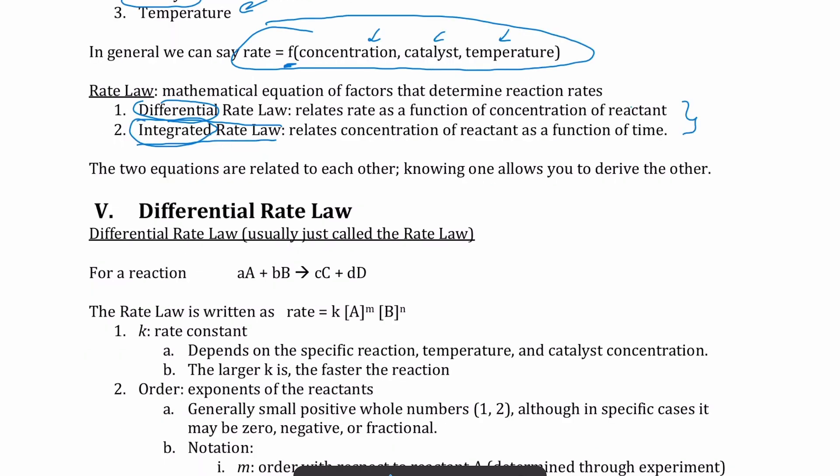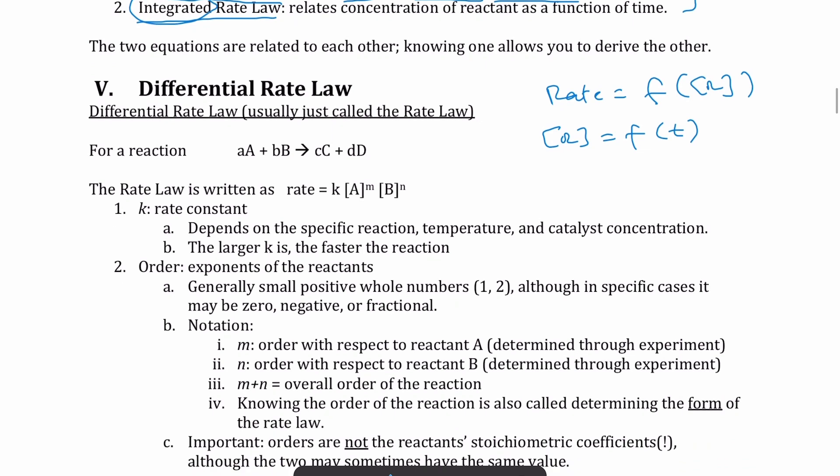Now the main thing you need to know here is that the differential rate law tells you rate as a function of concentration of reactant. So the equation would look something like rate is F of concentration of reactant, whereas the integrated rate law is relating concentration of reactant as a function of time. We'll see it written in more expanded form later on, but this is just an idea to keep in mind that each of these rate law has its own form. So we're going to start with the differential rate law, which typically is just called the rate law. So when we say determine the rate law, what we mean is just determine the differential rate law.